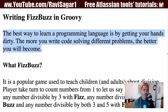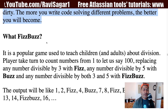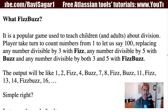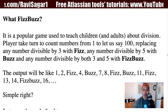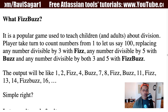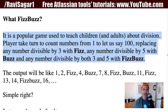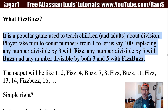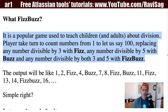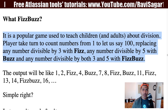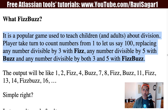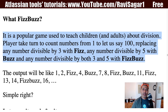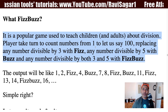Today I want to start with implementing the FizzBuzz program in Groovy. If you don't know what FizzBuzz is, it is basically a simple game used to teach children or maybe adults about division. What needs to be done is: you replace any number divisible by 3 with Fizz, any number divisible by 5 with Buzz, and any number divisible by both 3 and 5 with FizzBuzz.